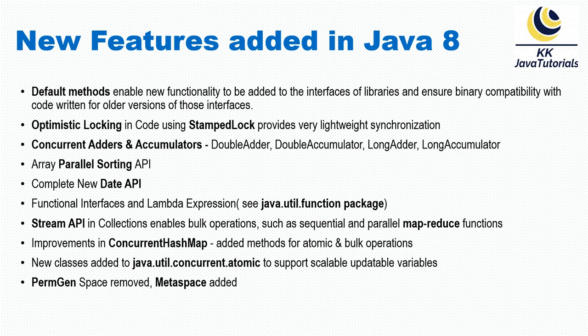Next, let's talk about the java.util.concurrent.atomic package. This package came with a lot of new classes like concurrent adders and accumulators — DoubleAdder, DoubleAccumulator, LongAdder, and LongAccumulator. These classes facilitate working with data types like double and long in an efficient manner, and they are thread-safe.